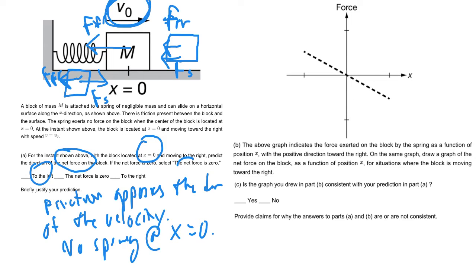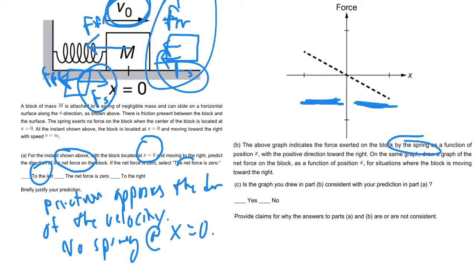For question B, they give you the graph just of the spring force. Notice this is consistent with what we discussed — on the positive x side, the spring force is positive; on the negative x side, the spring force is negative. Friction is always negative. When we add friction to the spring force on the right side, the net force is shifted down — friction to the left plus spring force to the left gives an overall force less than the spring force alone.